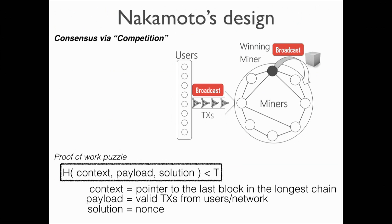Users first broadcast the transactions to the network. Then the miners compete, trying to solve some proof-of-work puzzle, but following some rules. The winning miner is allowed to define the block, and they can keep generating block after block. The core of Nakamoto's design is this proof-of-work puzzle, which is based on a hash function. Miners will follow their longest chain, or the most difficult chain, and try to find some nonce so that the hash inequality can be satisfied.